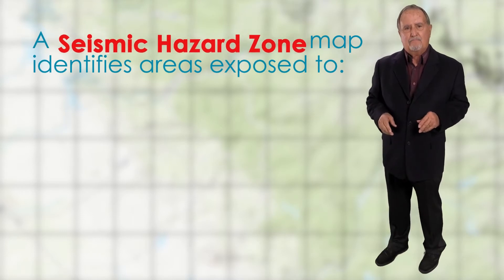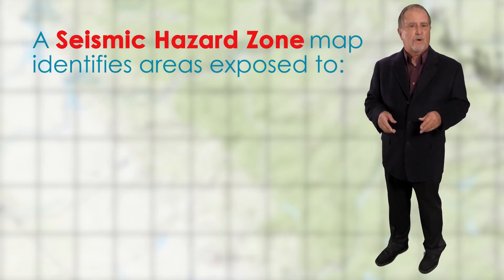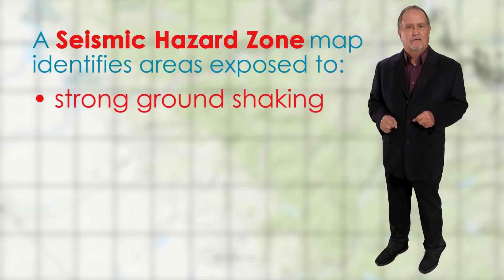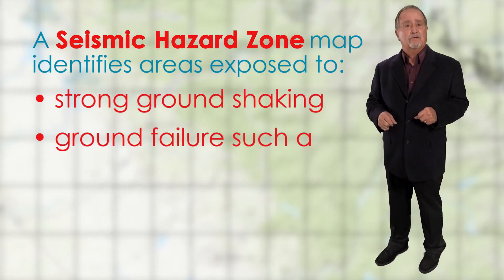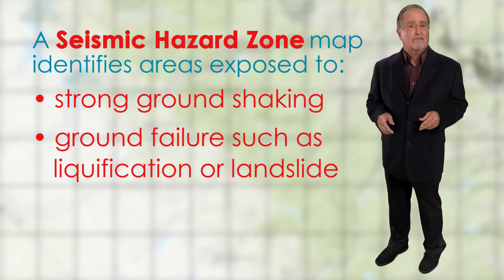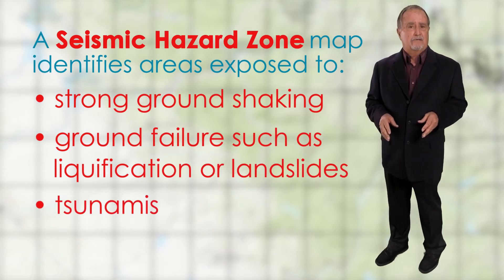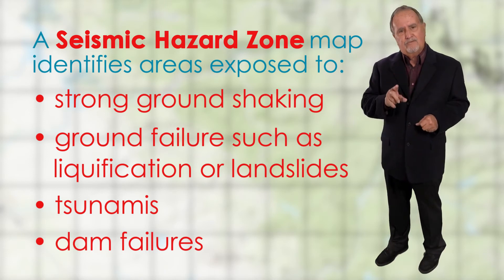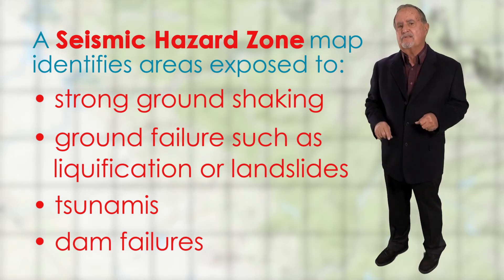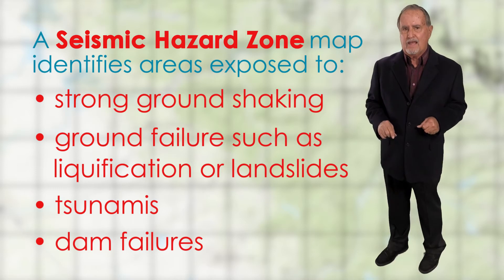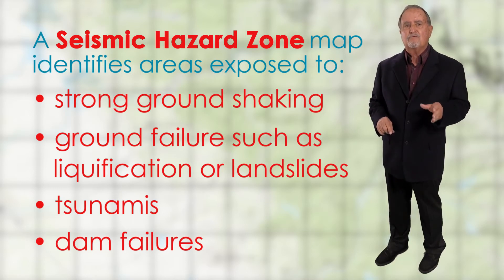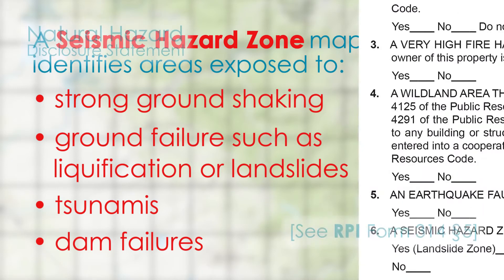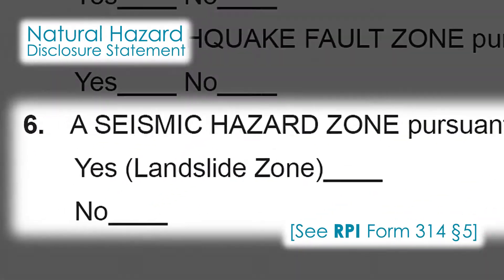A seismic hazard zone map identifies areas which are exposed to earthquake hazards such as strong ground shaking, ground failures such as liquefaction or landslides, tsunamis, and dam failures. If the property for sale is susceptible to any of the earthquake hazards, the seismic hazard zone disclosure on the NHD statement is to be marked yes.